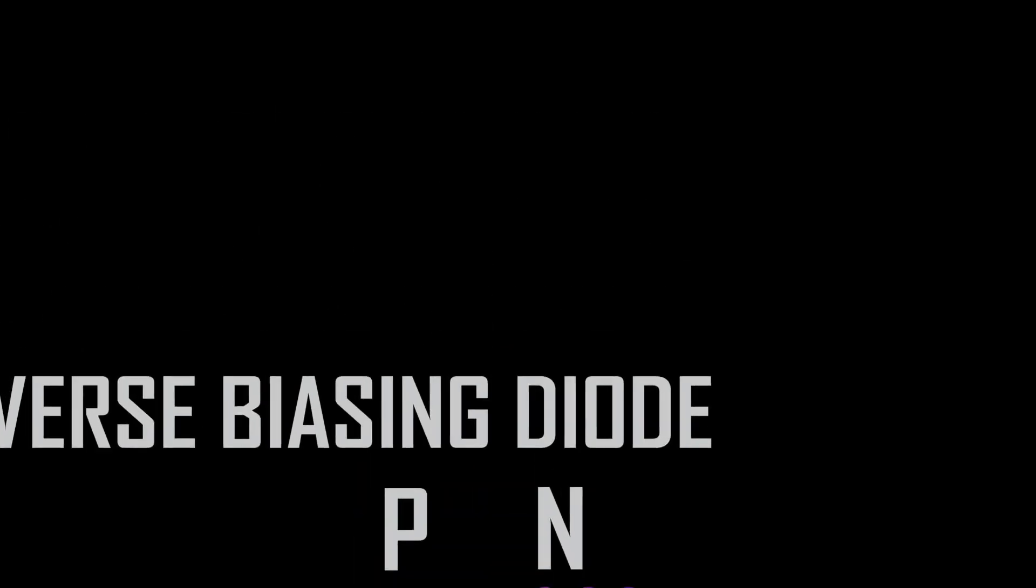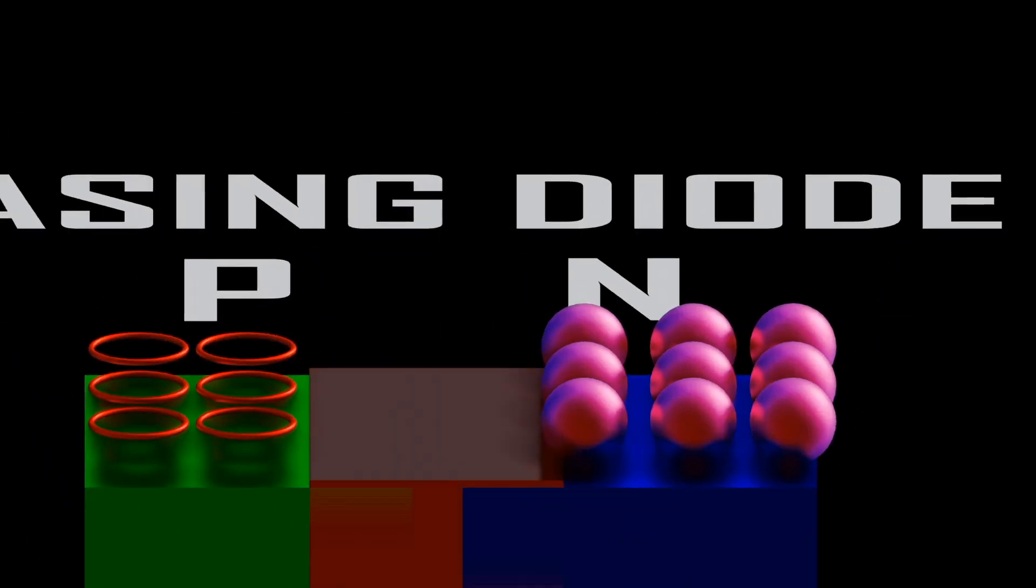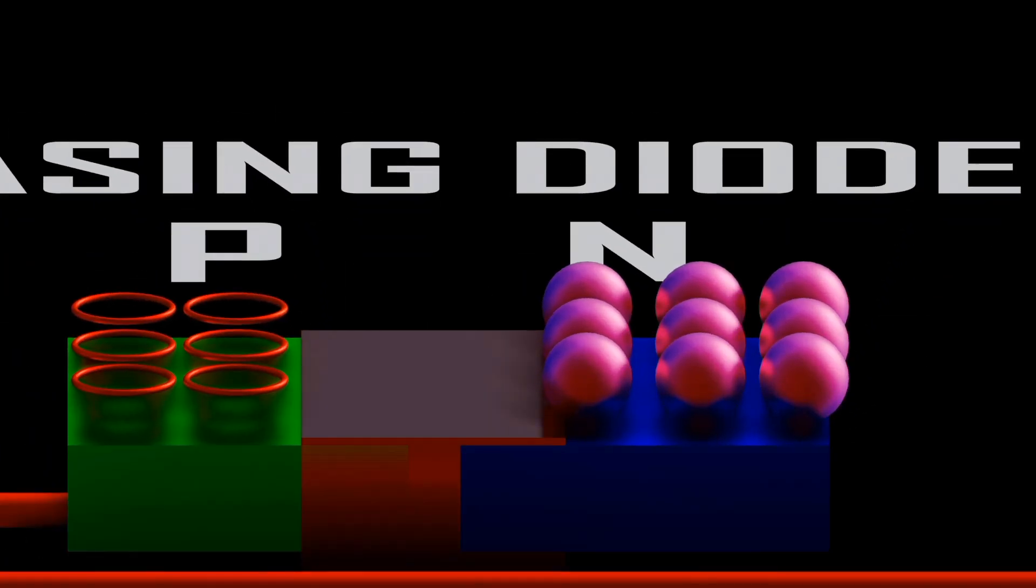When these two types of doped materials are combined, they form a P-N junction, having P-type full of holes and N-type full of electrons. This is how diodes are formed.